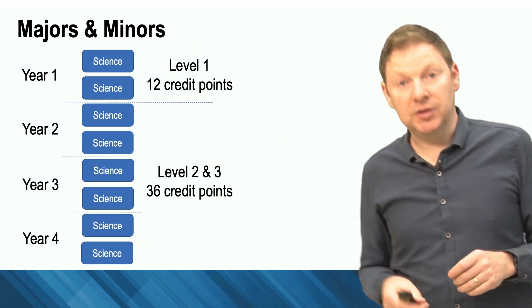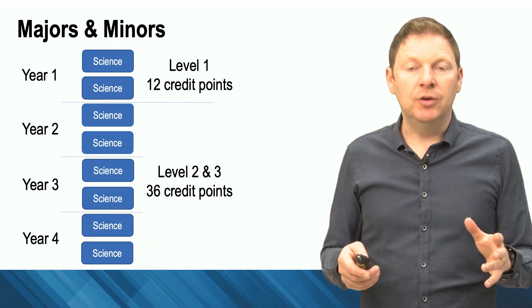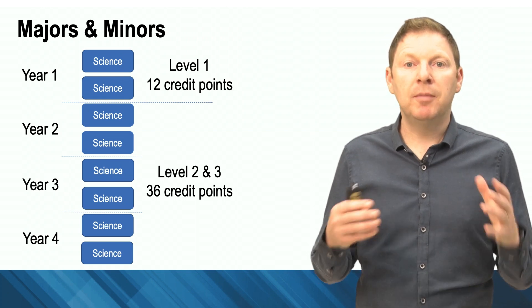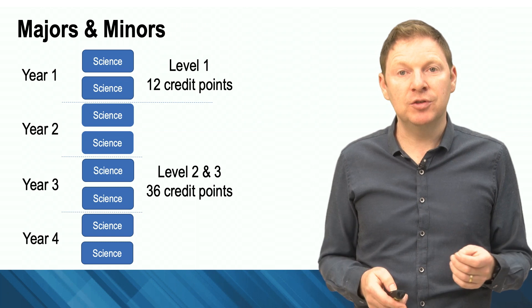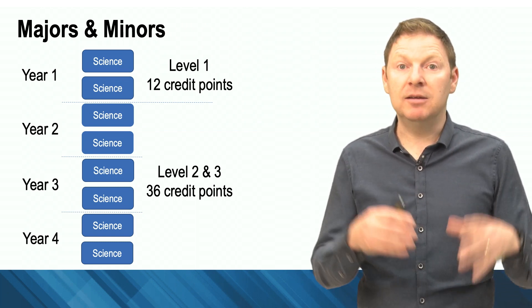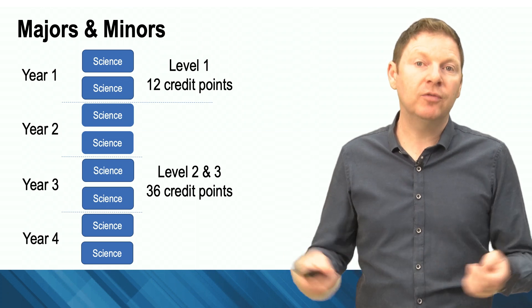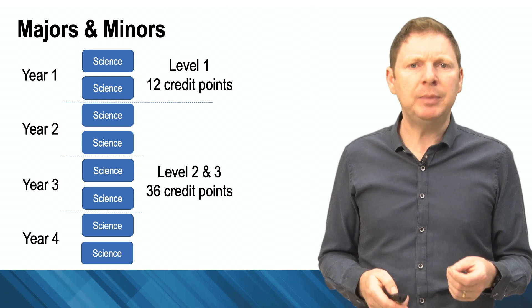So let's focus on the science side, starting with a major. Every single science student will complete what we call a major in a particular area. There are 25 different majors to choose from. It's going to be a mixture of first year subjects, and then second year subjects, finishing off with third year subjects, which start specialising a little more deeply in that discipline.